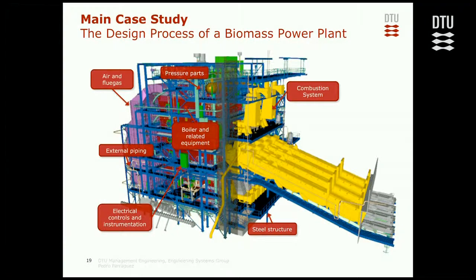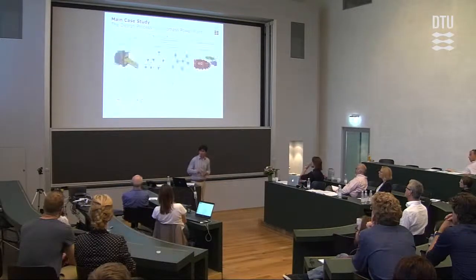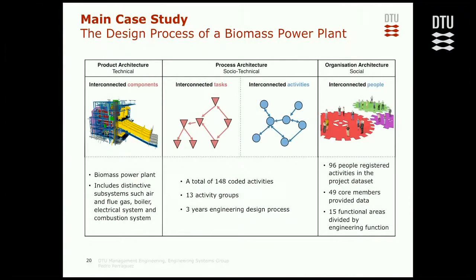Then I moved to my main case study: the design process of a biomass power plant, where the whole plant is in reality several subsystems designed semi-independently in different teams that sometimes have overlapping membership. In terms of what we saw before, we have the product architecture — things like air and flue gas, boiler, electrical systems, and combustion systems. On the organization architecture, in the main database there were 96 people registered; 49 were considered core members and provided data ending up in a registry of 77 people in the full survey, with 15 functional areas divided by engineering function. At the level of the process, I have 148 coded activities, 13 activity groups, and roughly three years of engineering design process.